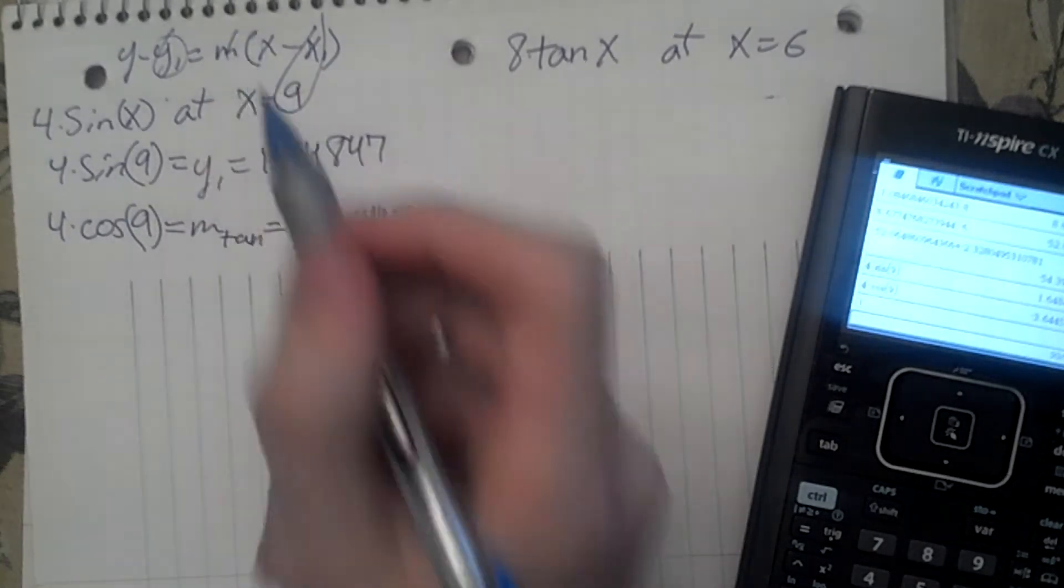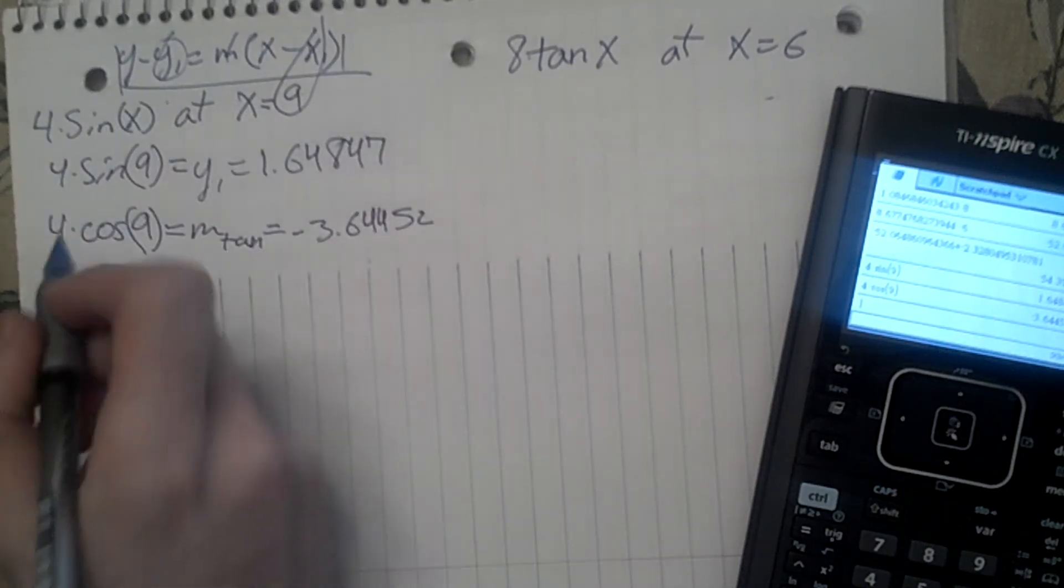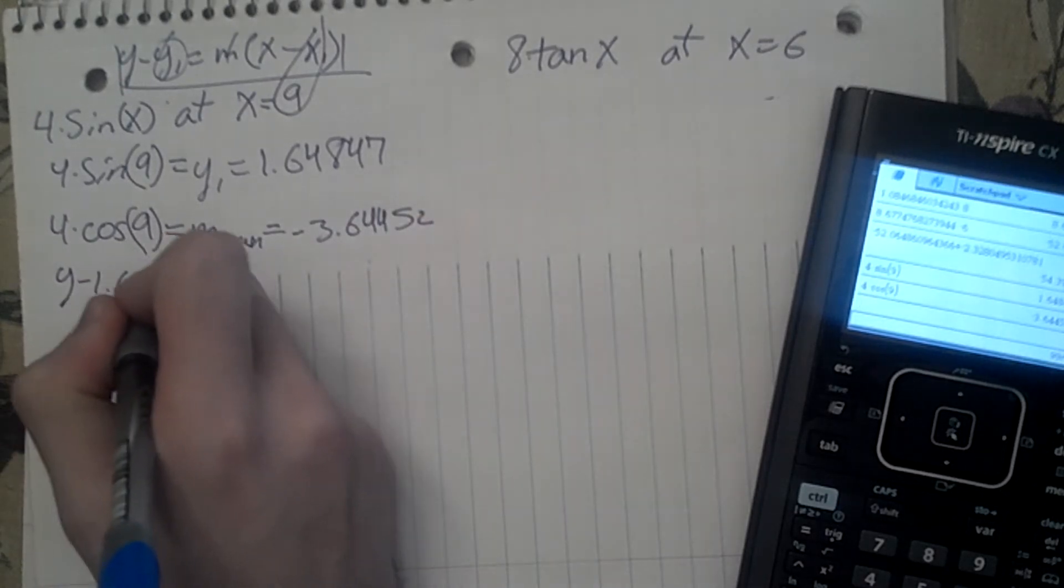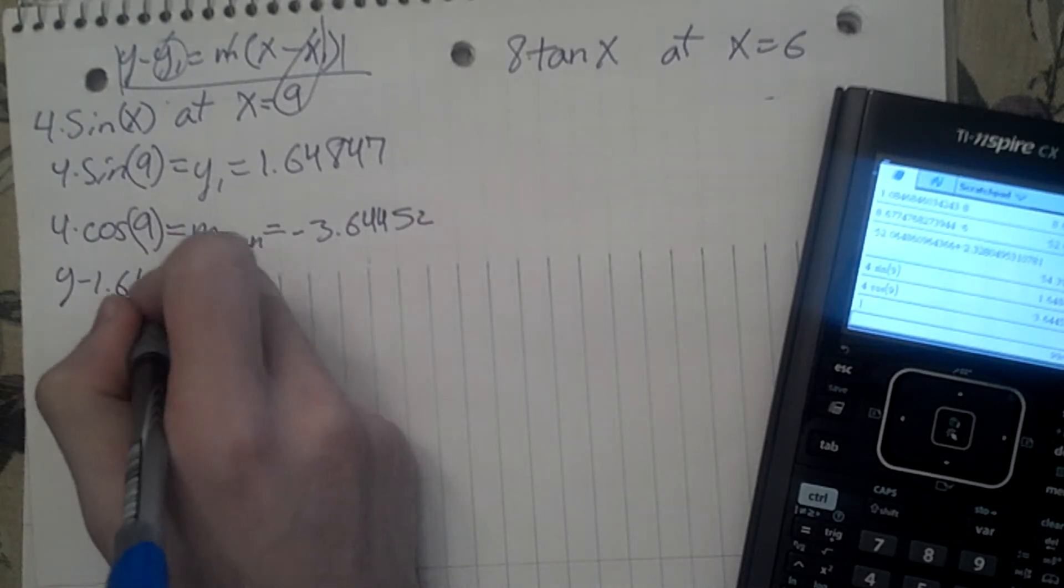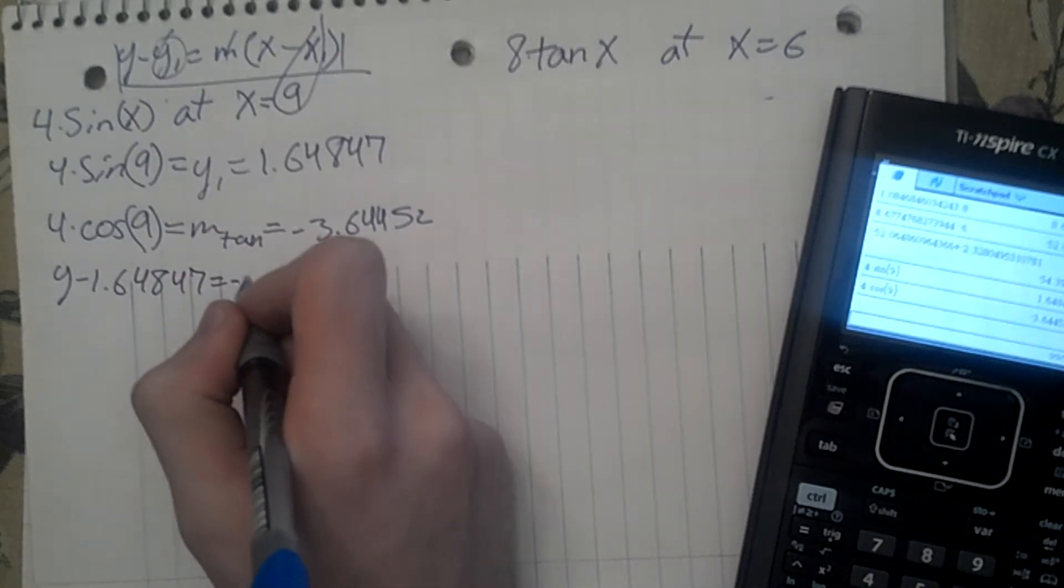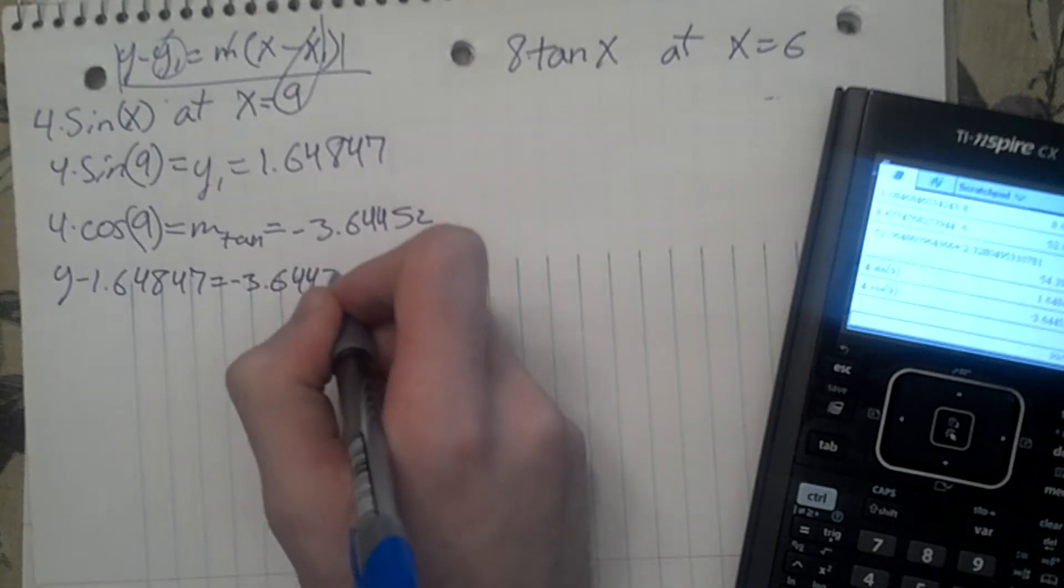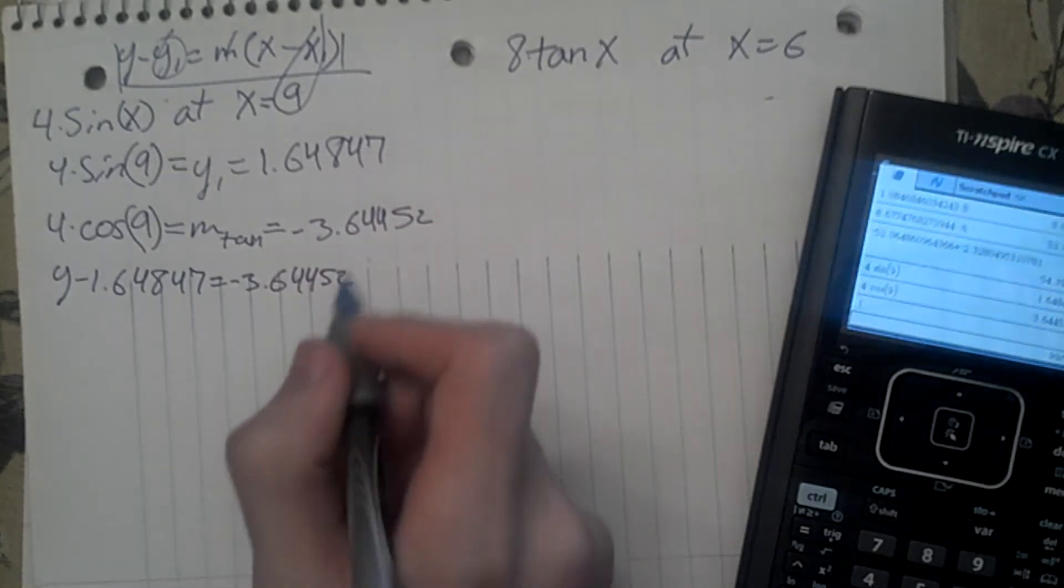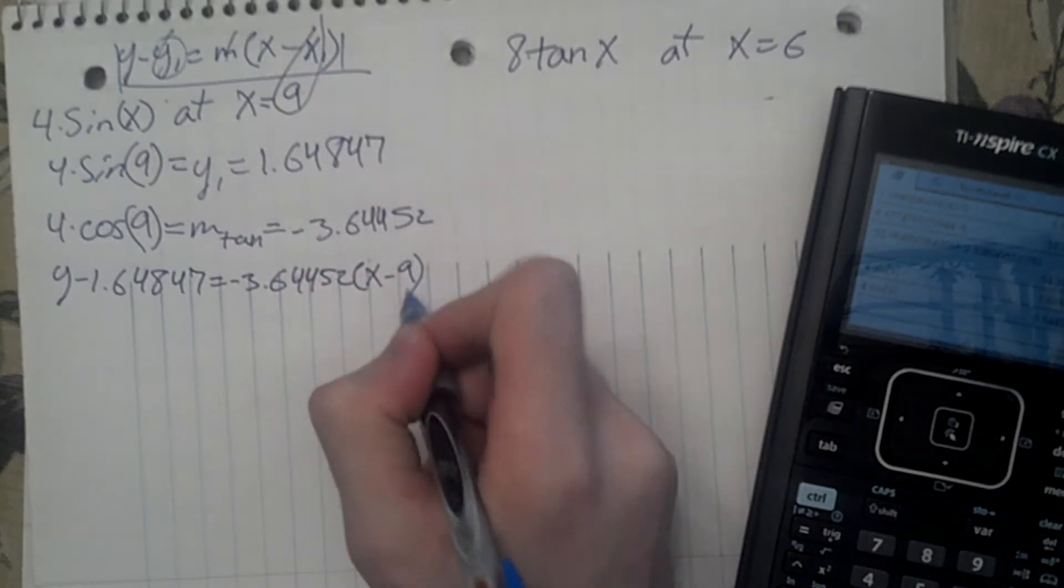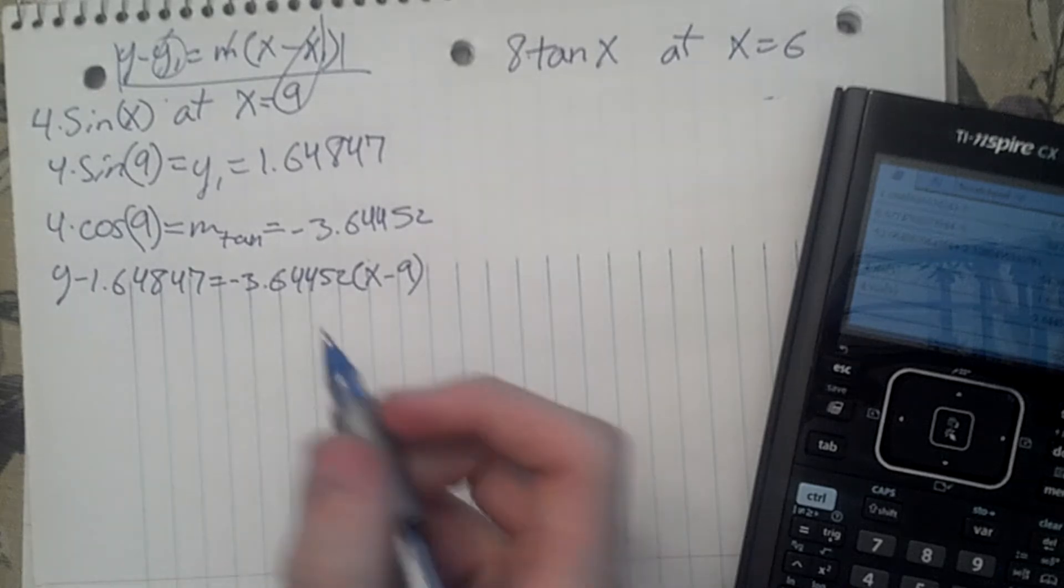We're going to plug it into our thing up here. y minus y1, which is 1.64847, equals m, which is negative 3.6452, times x minus x1, minus 9 for x1.